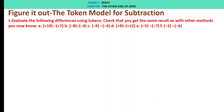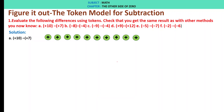Figure it out: the token model for subtraction, Question 1. Evaluate the following differences using tokens. A: plus 10 minus of plus 7. We have plus 10 tokens. We strike out 7 of them, and we are left with 3 tokens. Therefore, 10 minus of plus 7 is 3.